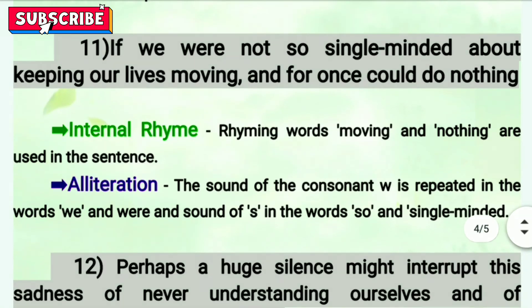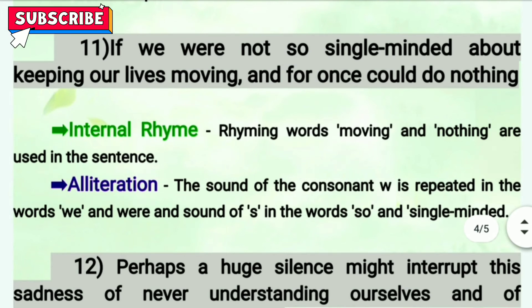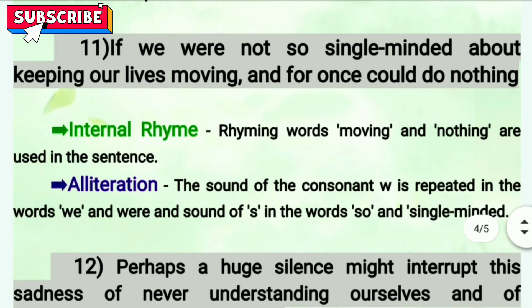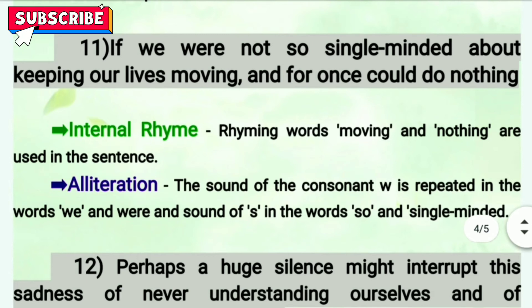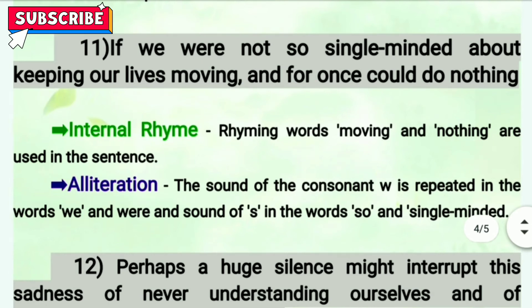Eleventh line: 'If we were not so single-minded about keeping our lives moving and for once could do nothing.' The first figure of speech is internal rhyme, because 'moving' and 'nothing' both rhyme and are used in the same sentence. The next is alliteration — the sound of W is repeated: 'we were.' Also 'single-minded' — the S sound is repeated.